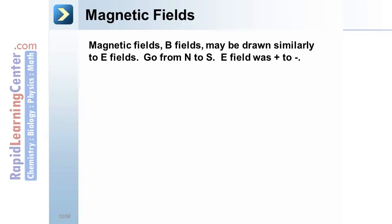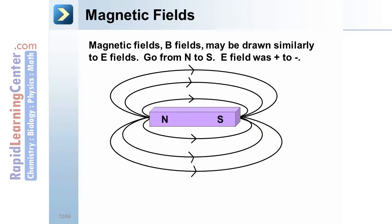Magnetic fields. Magnetic fields, or B fields, may be drawn similarly to electric fields. Go from north to south. The electric field moved from plus to negative. So here's our magnet. The magnetic field would be drawn something like this. Notice the lines have arrows which point from north to south.